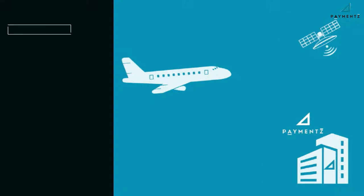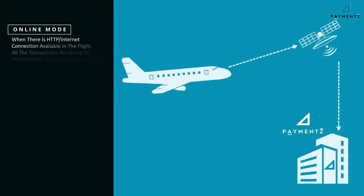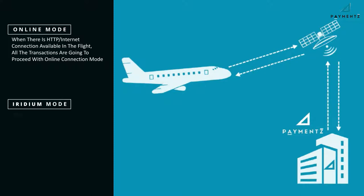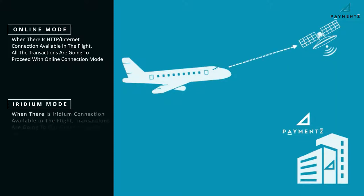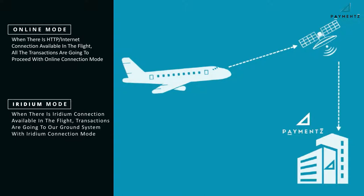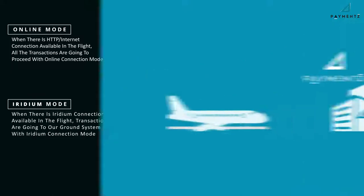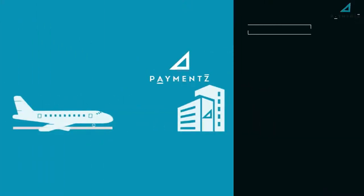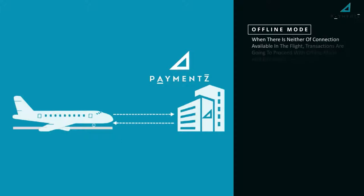Online mode: when there is HTTP or internet connection available in-flight, all transactions are sent to our ground system using online connection mode. Iridium mode: when there is an Iridium connection available in-flight, transactions are sent to our ground system using Iridium connection mode.